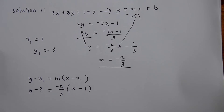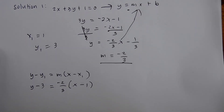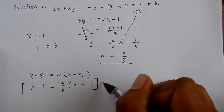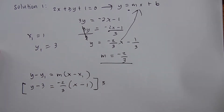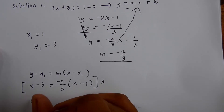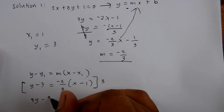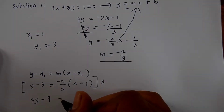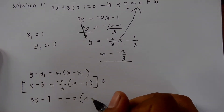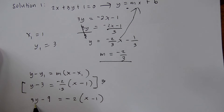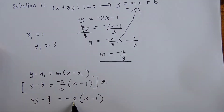Since our denominator is 3, we multiply both sides by 3 to simplify the equation. So it becomes 3y minus 9 equals negative 2 times the quantity x minus 1, because 3 times negative 2 thirds is negative 2. Then we copy x minus 1.